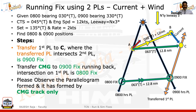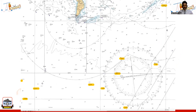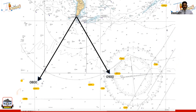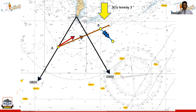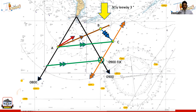Let us do this example on the chart for better visualization. Draw PL1 and PL2, then choose point Alpha. Draw a small length of CTS track and apply the leeway to get the leeway track. Measure 12 nautical miles along it and then draw the current to arrive at Charlie. Complete the triangle to get your CMG. Transfer the first PL to Charlie — the intersection gives the nine o'clock fix. Retrace the CMG track to get the eight o'clock fix and understand the vessel's orientation over that one hour.